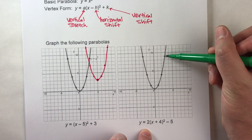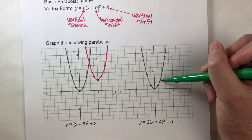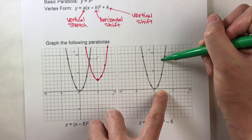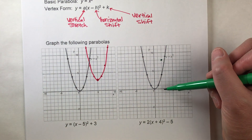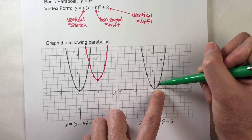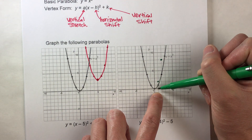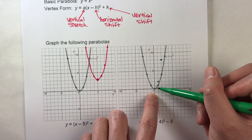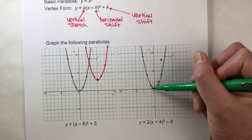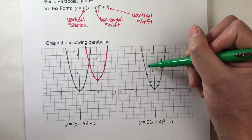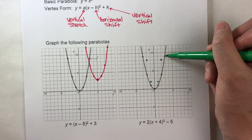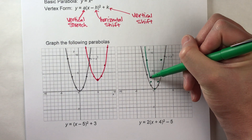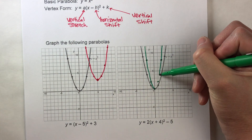For example, this point here — see how it's 4 steps away from the x-axis? When we stretch it by 2, this point is going to stretch up to 8 steps away from the x-axis — it's going to double. This point right here is 1 step away from the x-axis, so it doubles to 2 steps. This point right here is on the x-axis, so it's 0 steps away — when we double it, it stays there. We'll do both sides the same way. So you can kind of see when we stretch it, it's going to look something like this.